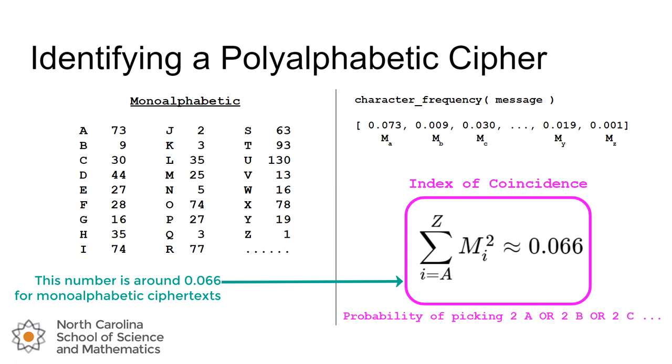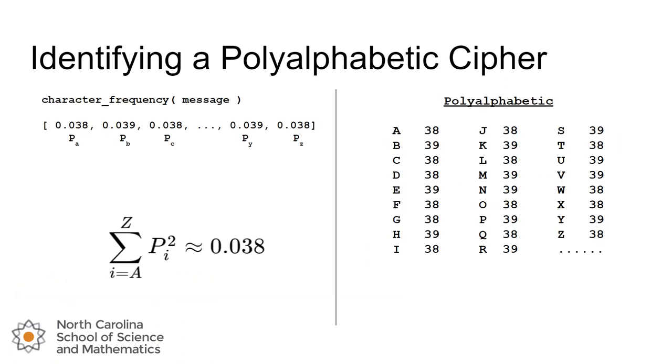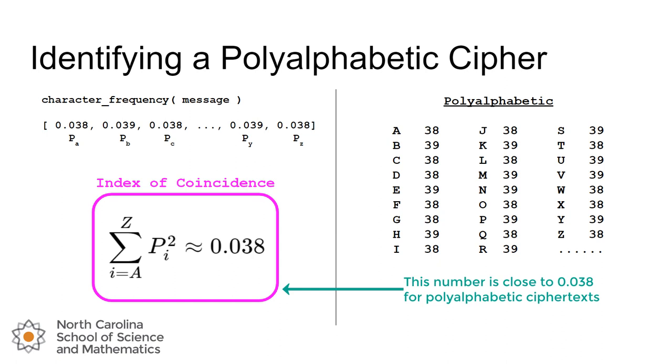When we do the same process for a polyalphabetic distribution, we get a different number. We get 0.038 or about a 3.8% chance that if you pick two letters out of that type of ciphertext, the two letters you've just chosen are the same letter. Again, not concerning ourselves which letter it happens to be, but any of the 26, that's our probability. It might be surprising or not so intuitive that a rough versus a smooth distribution would give you this difference in the squared outcome.